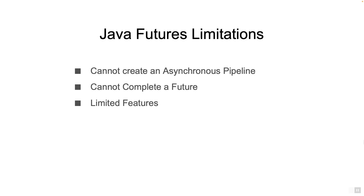In the last couple of lectures, we have seen Java Futures in action. In this lecture, let's take a look at the limitations of Java Futures. In most cases, programming with Java Futures works fine as long as you're doing an imperative style of software development. But if your entire architecture is based on reactive style programming, then you will find Java Futures to be limiting.